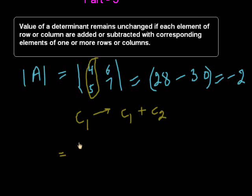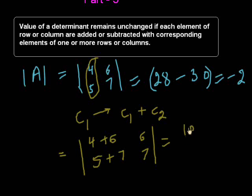And then we calculate its value. 4 plus 6, we are writing instead of 4, 5 plus 7 instead of 5. The second column elements 6 and 7 will be the same.